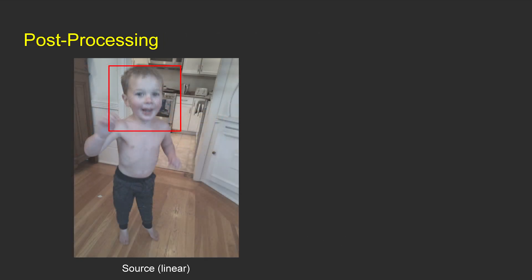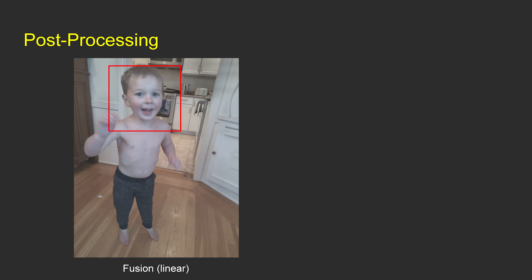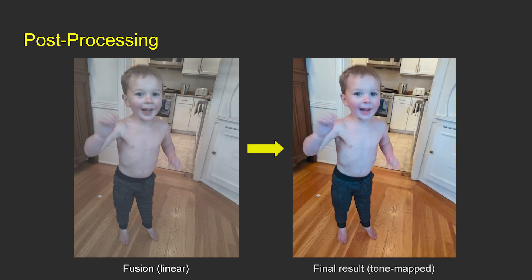After fusion, we blend the de-blurred face back to the full-source image with a soft alpha blending mask, and then apply post-processing steps such as local and global tone mapping to generate an 8-bit gamma-corrected image.